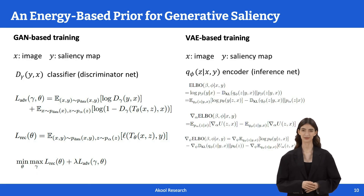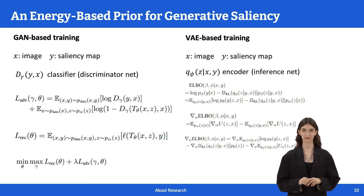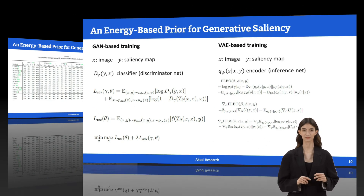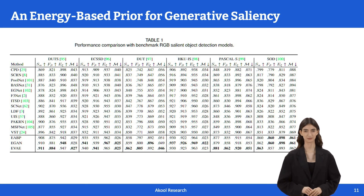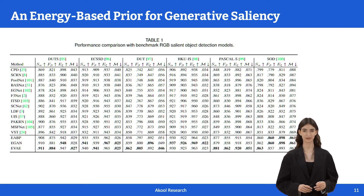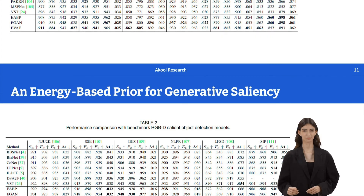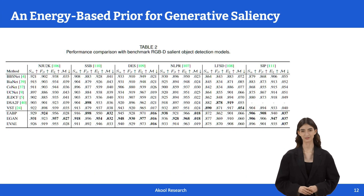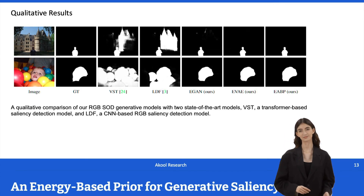Our framework using the energy-based prior can be easily generalized into both adversarial learning and variational inference frameworks. We apply the proposed frameworks to RGB salient object detection tasks. Experimental results show that our generative saliency model with an energy-based prior can achieve not only accurate saliency predictions but also reliable uncertainty maps that are consistent with human perception. We also apply our model to RGBD salient object detection tasks, and here are some qualitative results.